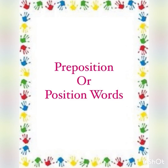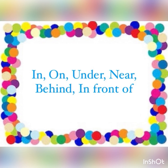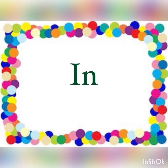A preposition is a word that tells us where a person, a place, a thing, or an animal is. Preposition ya position words aise words hote hain jin ki help se hume pata lagta hai koi cheez kaha hai. In, on, under, near, behind, in front of — yeh sab position words ya preposition hain. In means andar, on means upar, under means niche, near means paas, behind means piche, in front of means saamne.